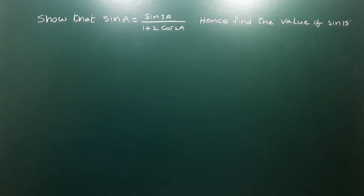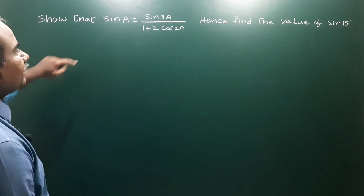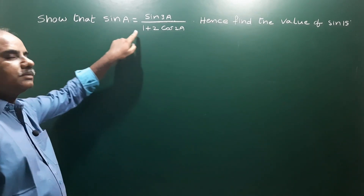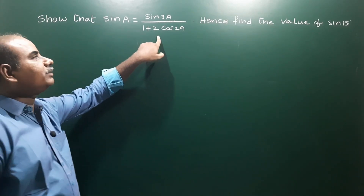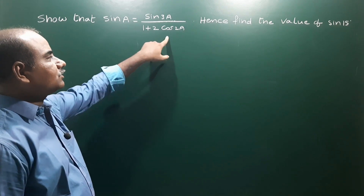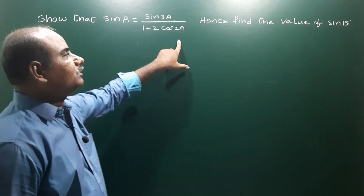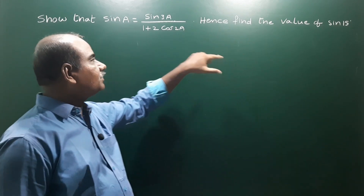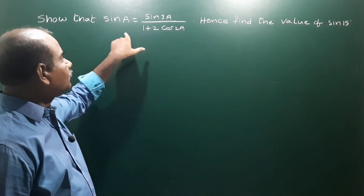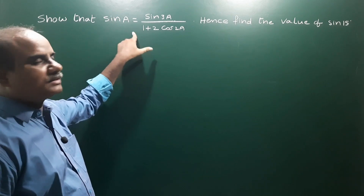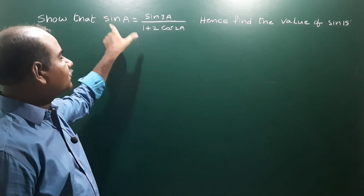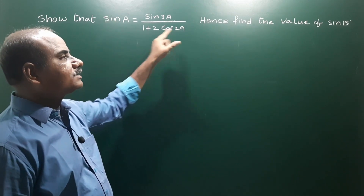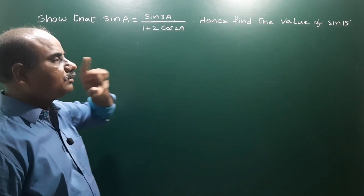Next problem: show that sin a is equal to sin 3a divided by 1 plus 2 cos 2a. Then find the value of sin 15 degrees from this result.